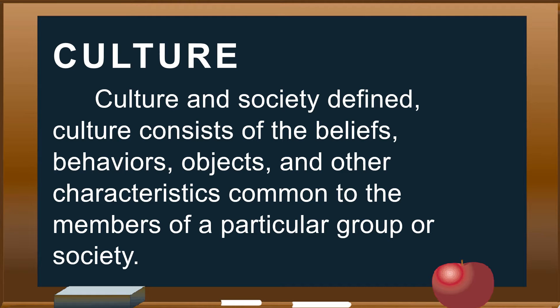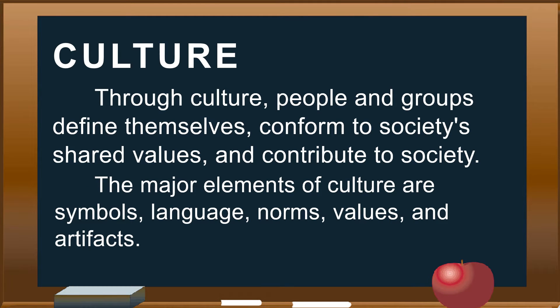Culture and society defined: Culture consists of the beliefs, behaviors, objects, and other characteristics common to the members of a particular group or society. Through culture, people and groups define themselves, conform to society's shared values, and contribute to society. The major elements of culture are symbols, language, norms, values, and artifacts.